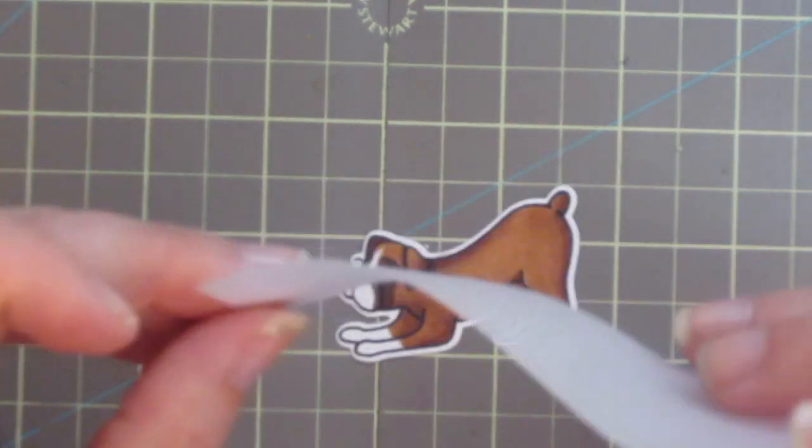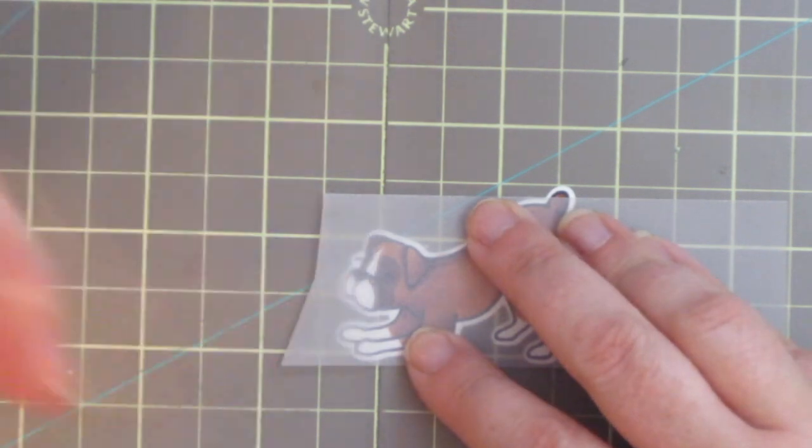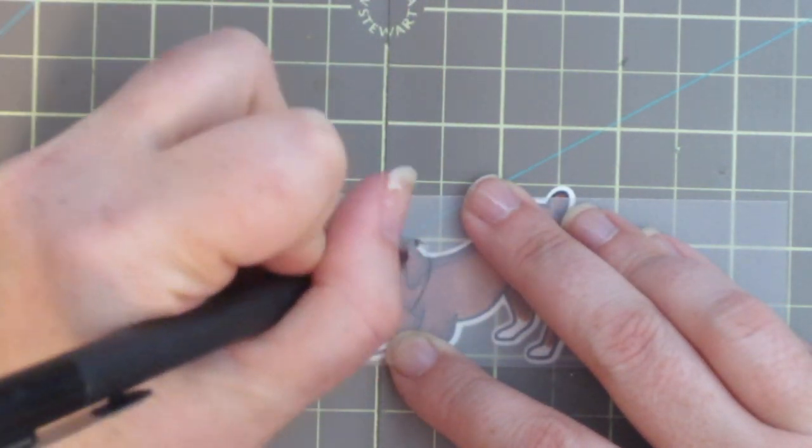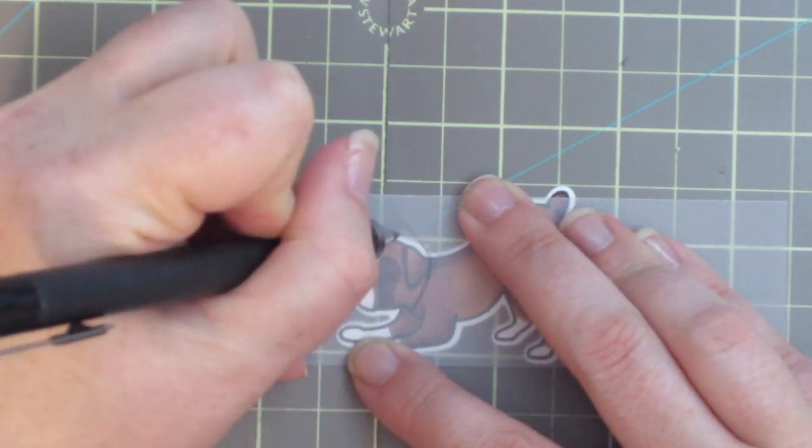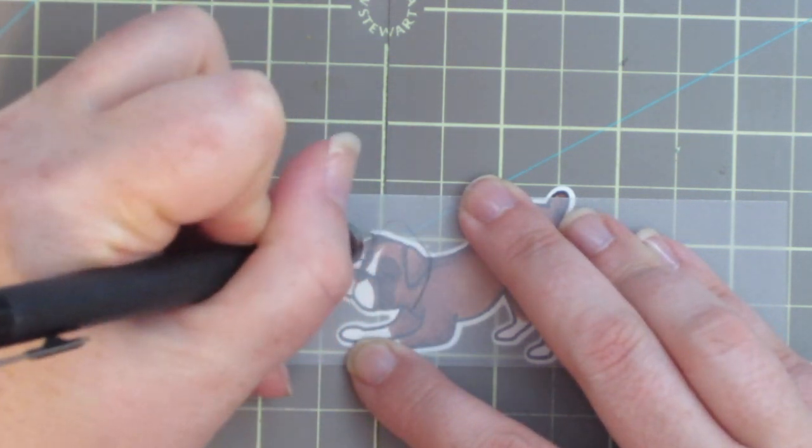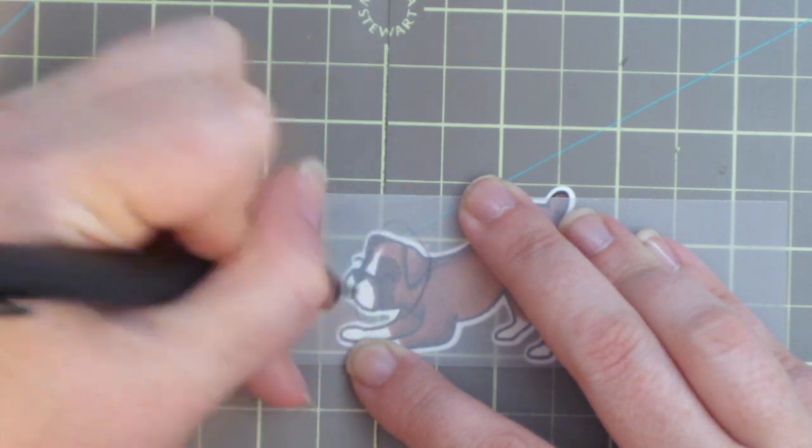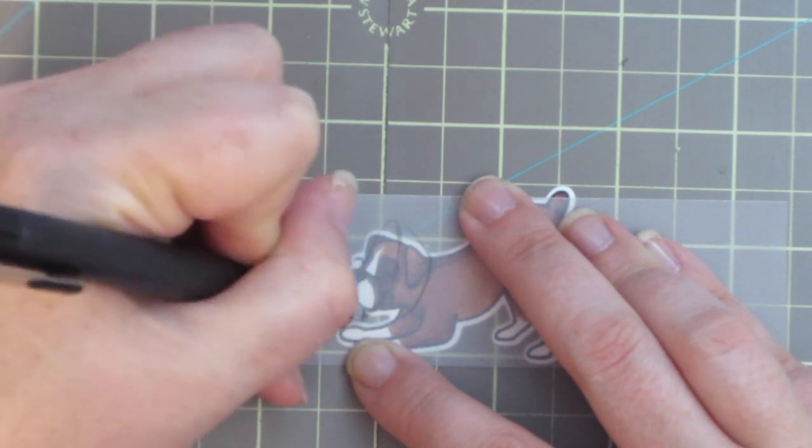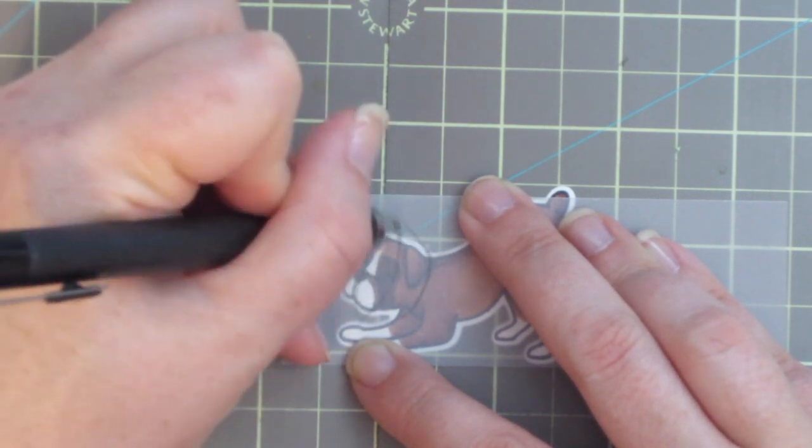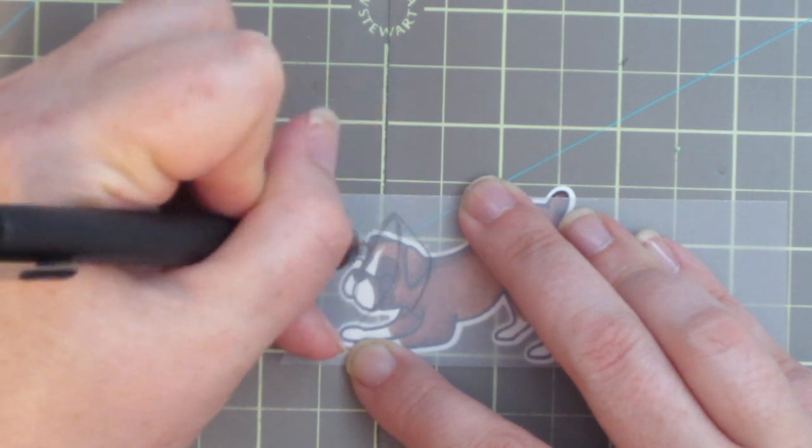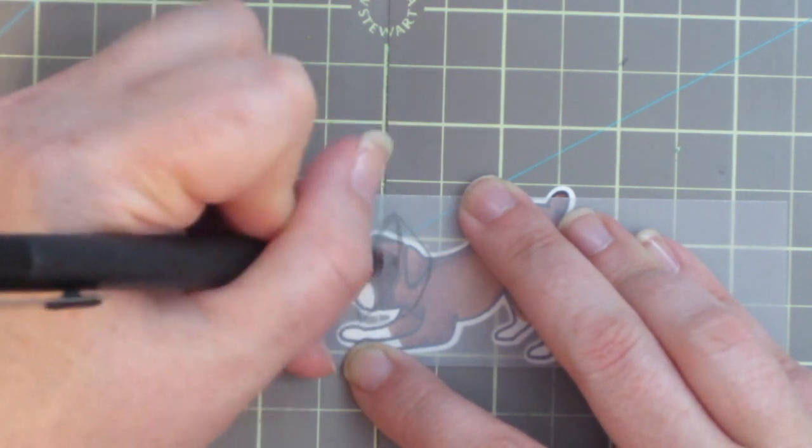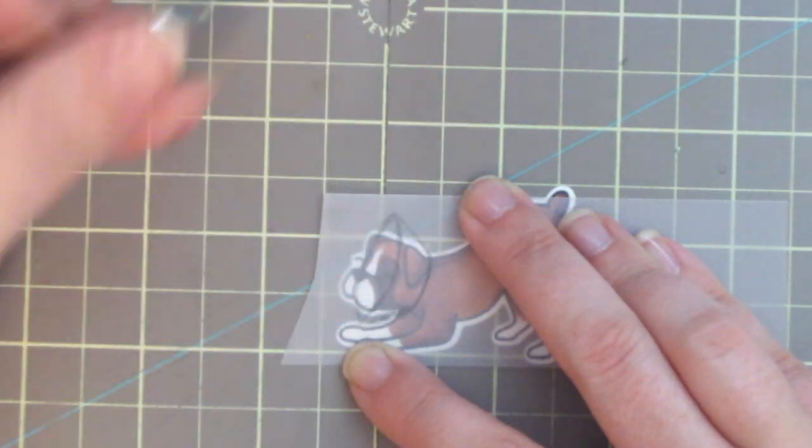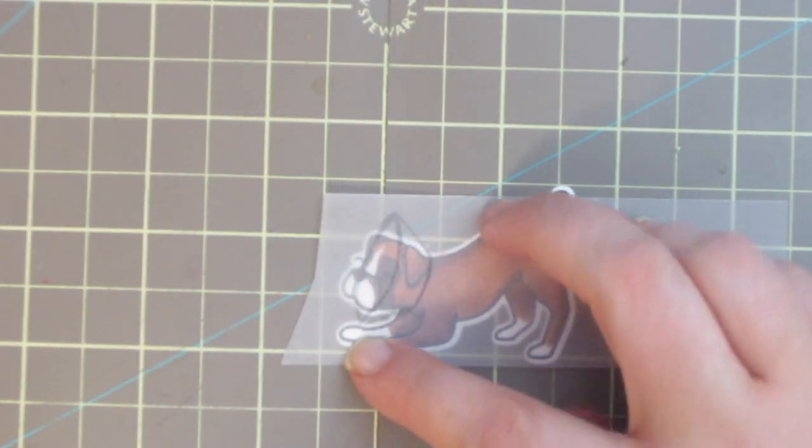So I'm actually making a get well soon card and I thought it would be fun to give this little guy a cone as if he would just come back from the vet's office. So I've got a piece of vellum here. This is just cheap vellum from Hobby Lobby and I'm taking a pencil and just roughing in an outline of how I want that to be. And I'm making sure to do both the outer portion that will be visible on the front side of his face but also the part that's going to wrap around on the other side and you'll see why in just a minute.